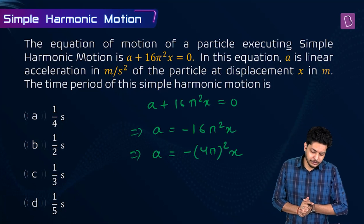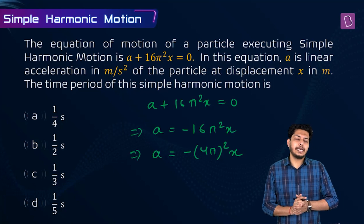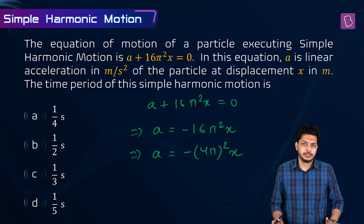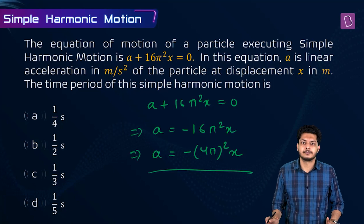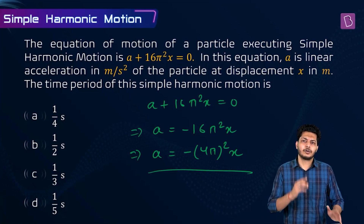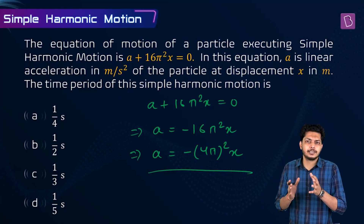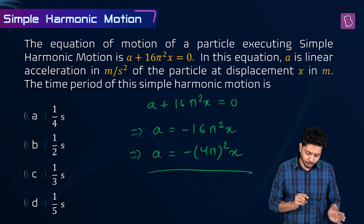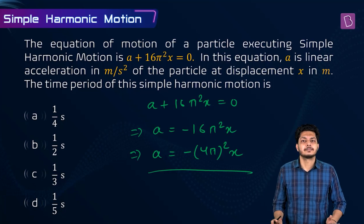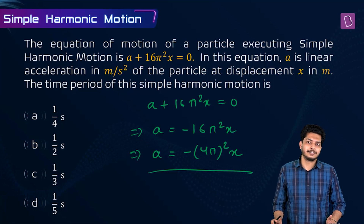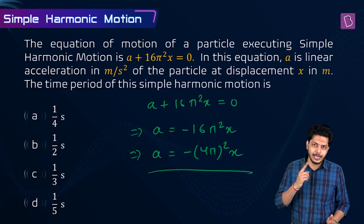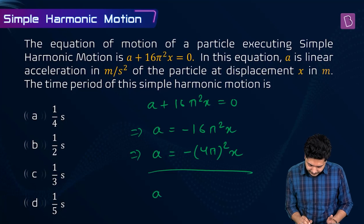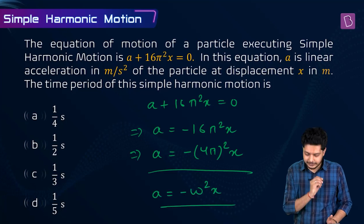Can you recall any equation from simple harmonic motion that looks similar to a equals minus 4π²x? Try to recall all the formulas from the chapter on simple harmonic motion. The matching formula is a equals minus ω²x.